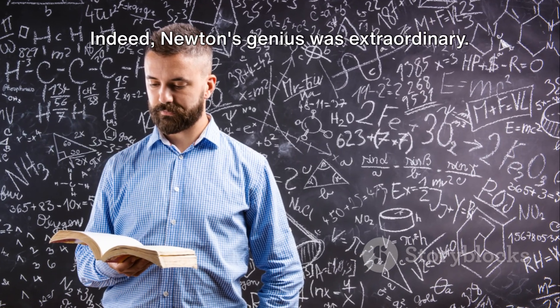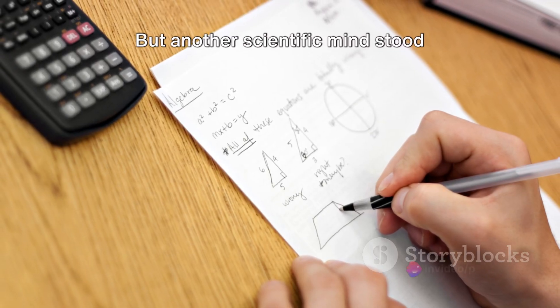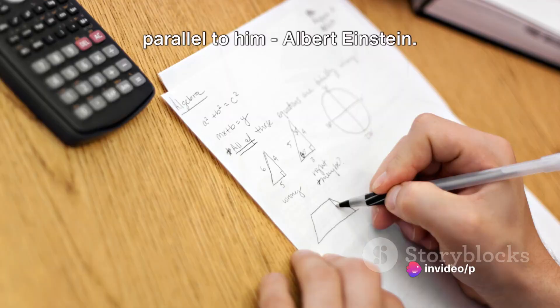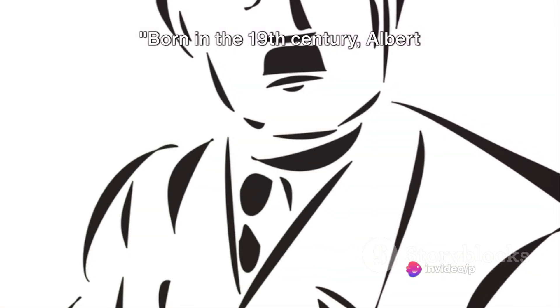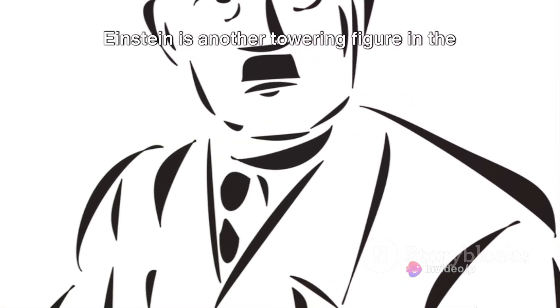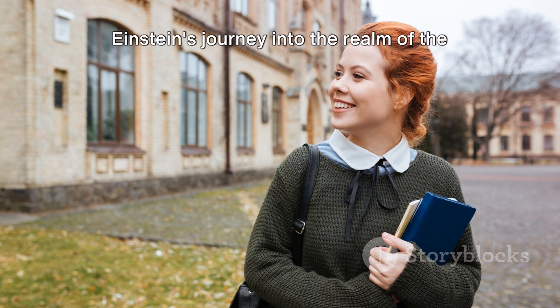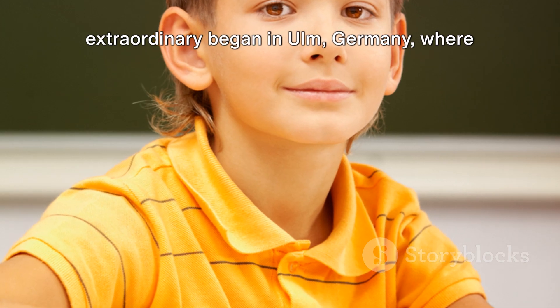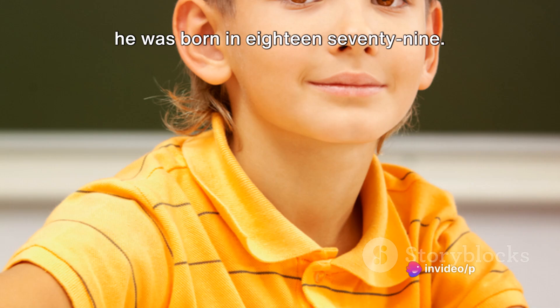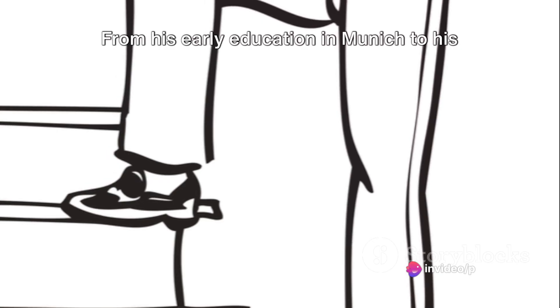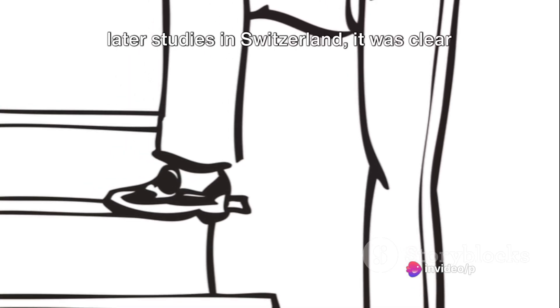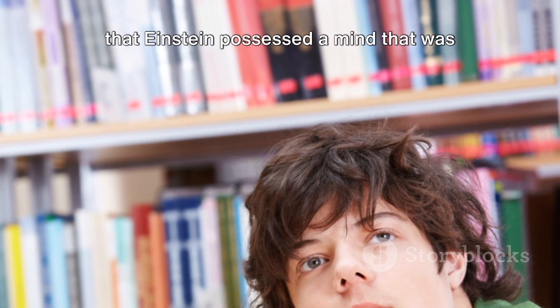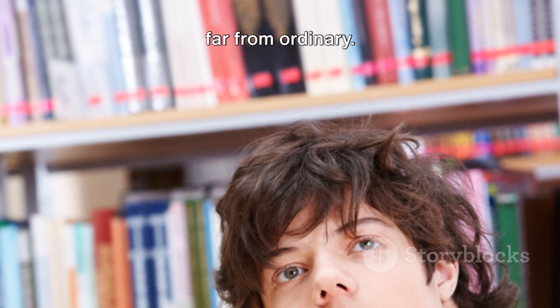Indeed, Newton's genius was extraordinary, but another scientific mind stood parallel to him, Albert Einstein. Born in the 19th century, Albert Einstein is another towering figure in the world of science. Einstein's journey into the realm of the extraordinary began in Ulm, Germany, where he was born in 1879. From his early education in Munich to his later studies in Switzerland, it was clear that Einstein possessed a mind that was far from ordinary.